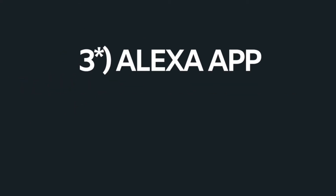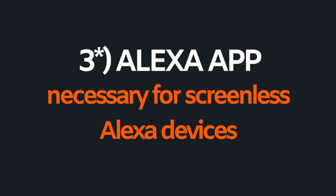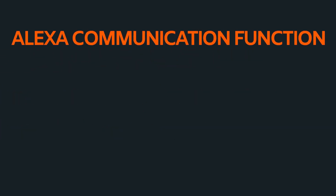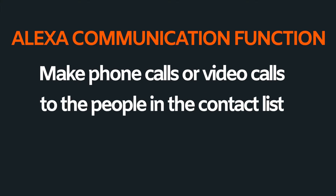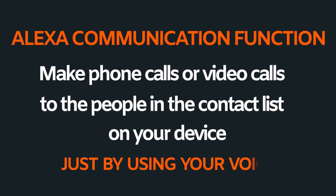However, with Echo Show devices — the ones with the screen — the setup can be done on the device itself. The Alexa communication function allows you to make phone calls or video calls to the people in the contact list on your device just by using your voice.